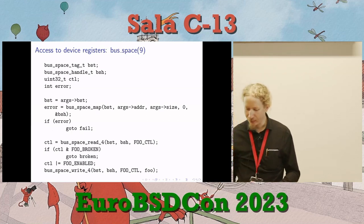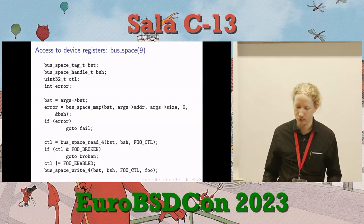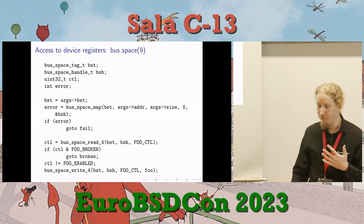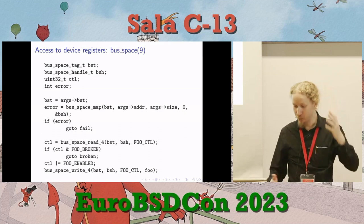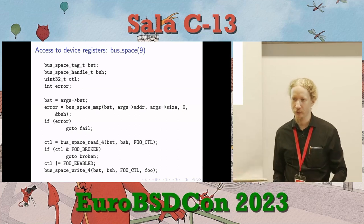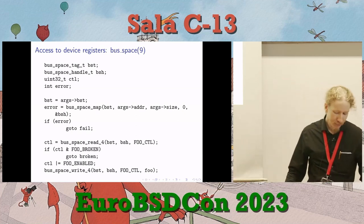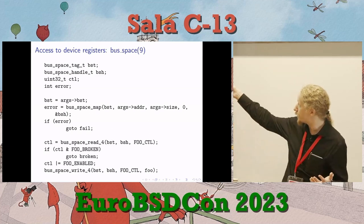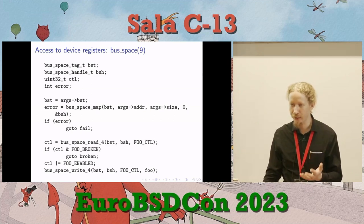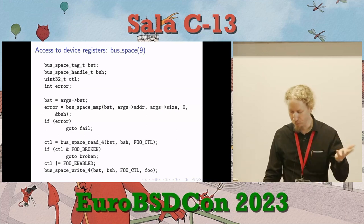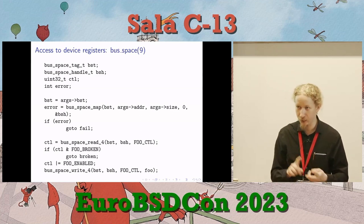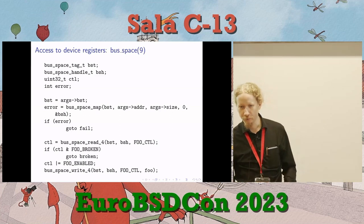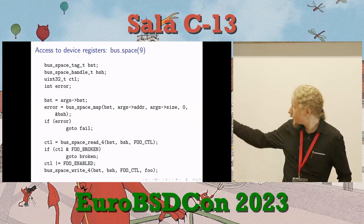When you have a driver in NetBSD, the bus gives you a bus space tag. There are a few different ways to get at device registers: IO ports and memory-mapped IO. If you want to use any device registers in NetBSD, you start with the bus space tag and an address given to you in the aux argument to match and attach functions in autoconf. PCI will give you bus space tags for memory-mapped IO and IO ports. You map it into a bus space handle, which represents a small contiguous window into the space of device registers. Then you can just read and write registers.